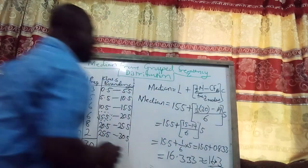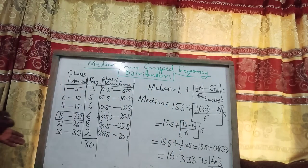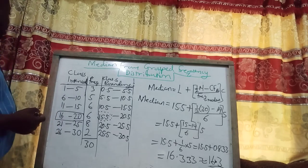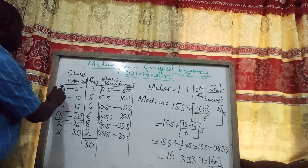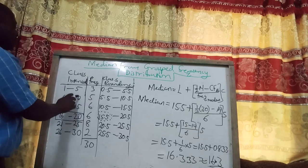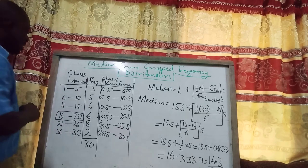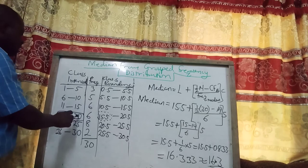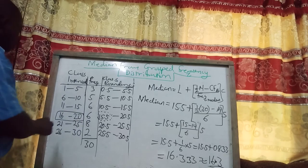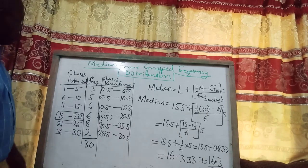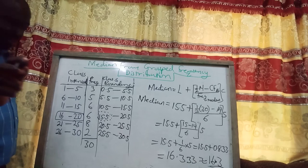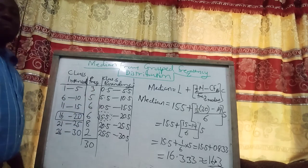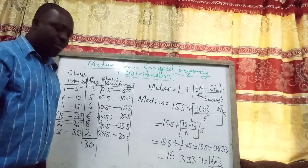So the median mark is approximately 16.3. This means that in the examination, with results grouped as: 1–5 had 3 students, 6–10 had 5, 11–15 had 6, 16–20 had 6, 21–25 had 8, and 26–30 had 2 students — the median mark scored is 16.3. Thank you very much, and we will continue.